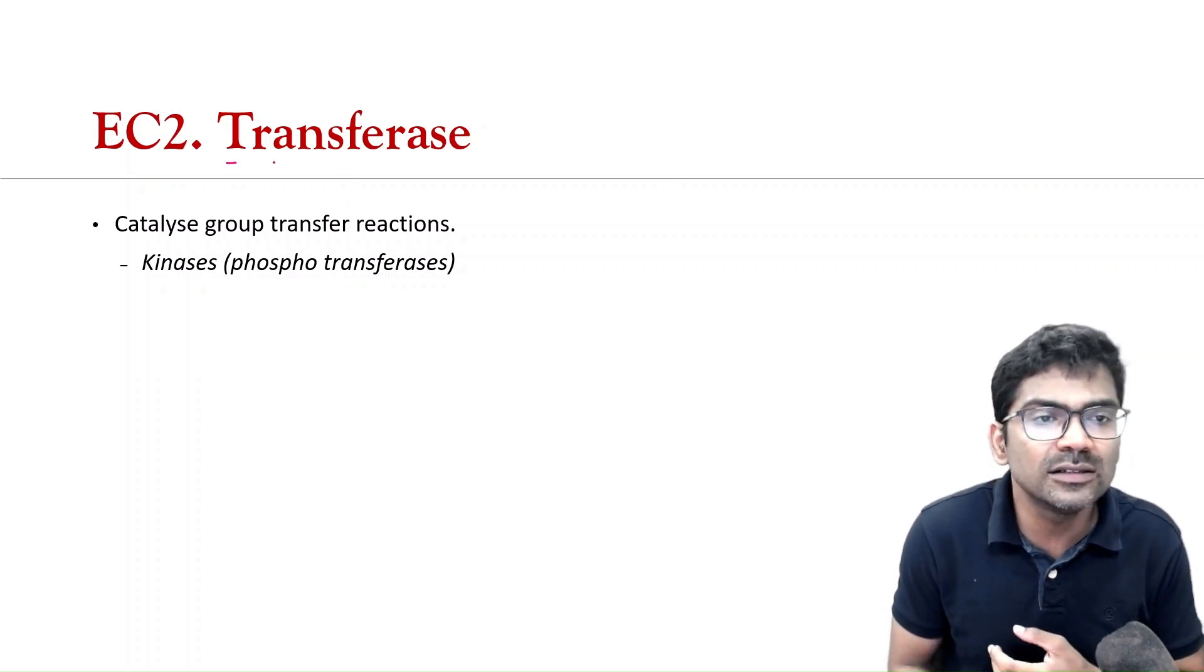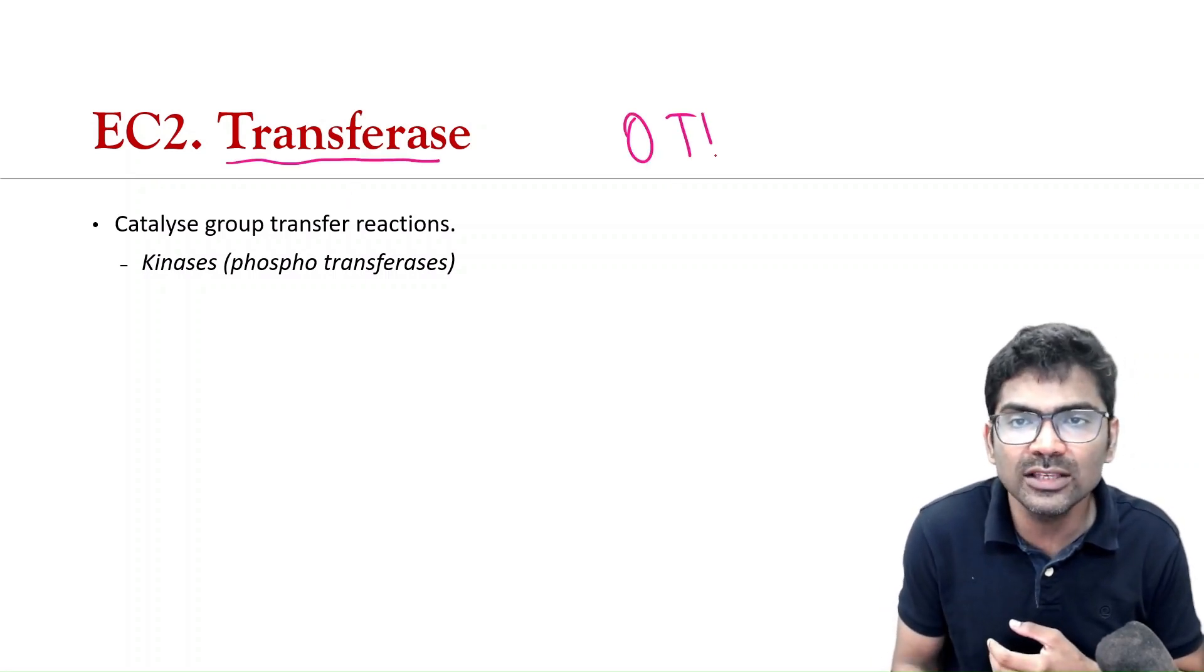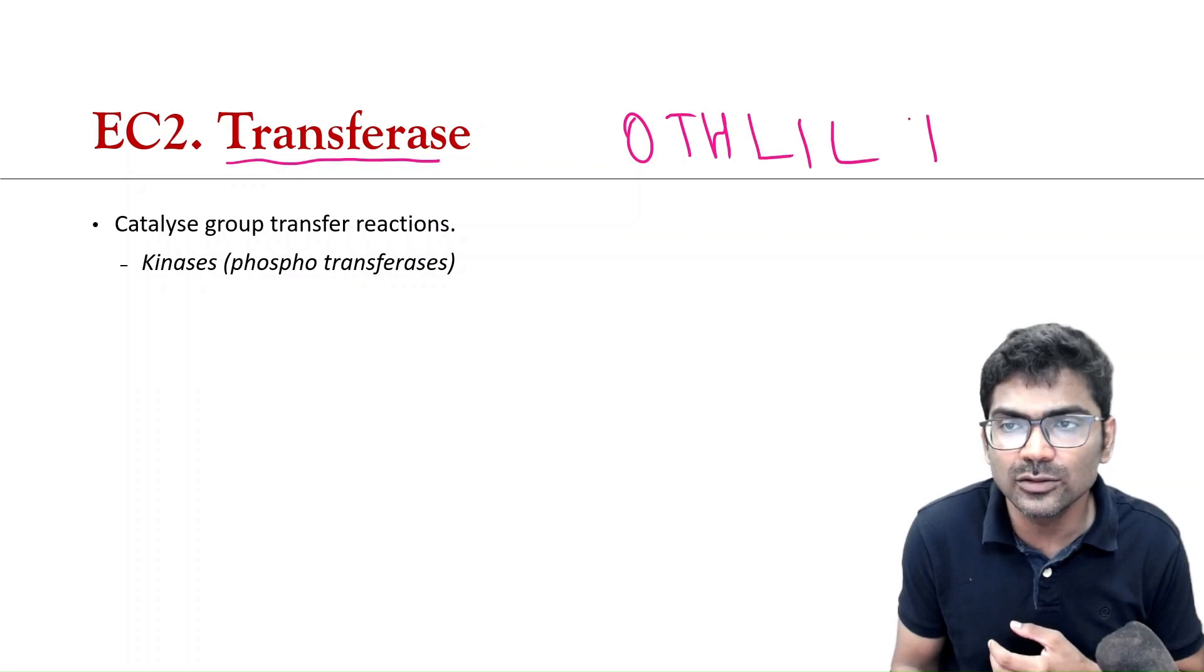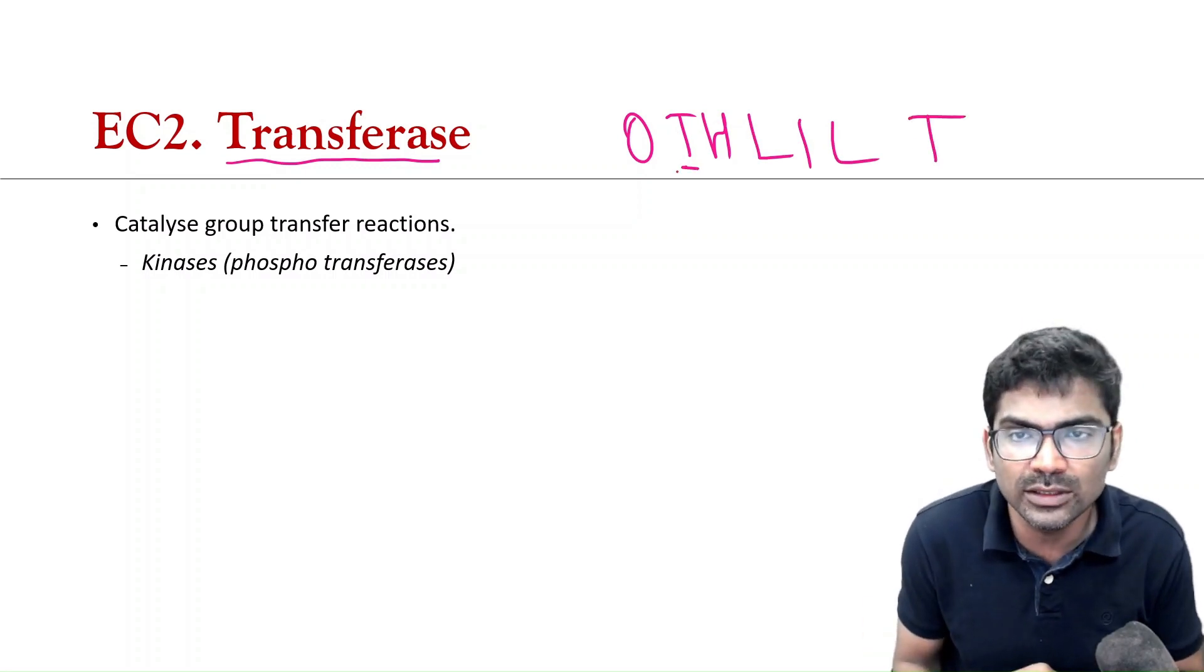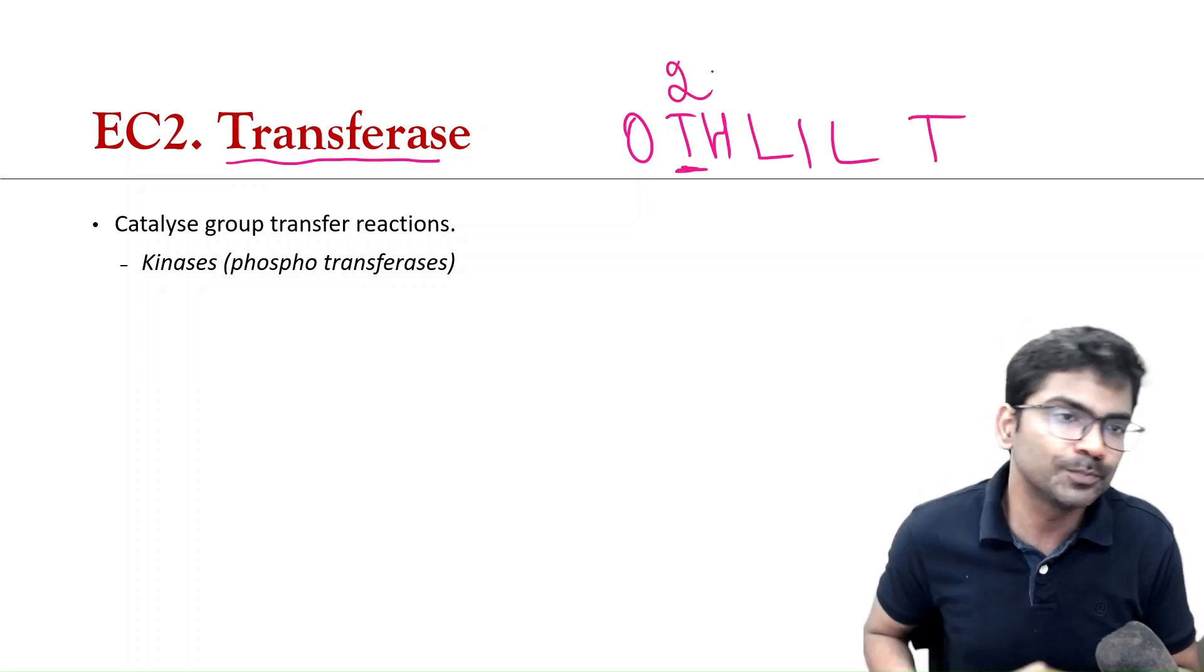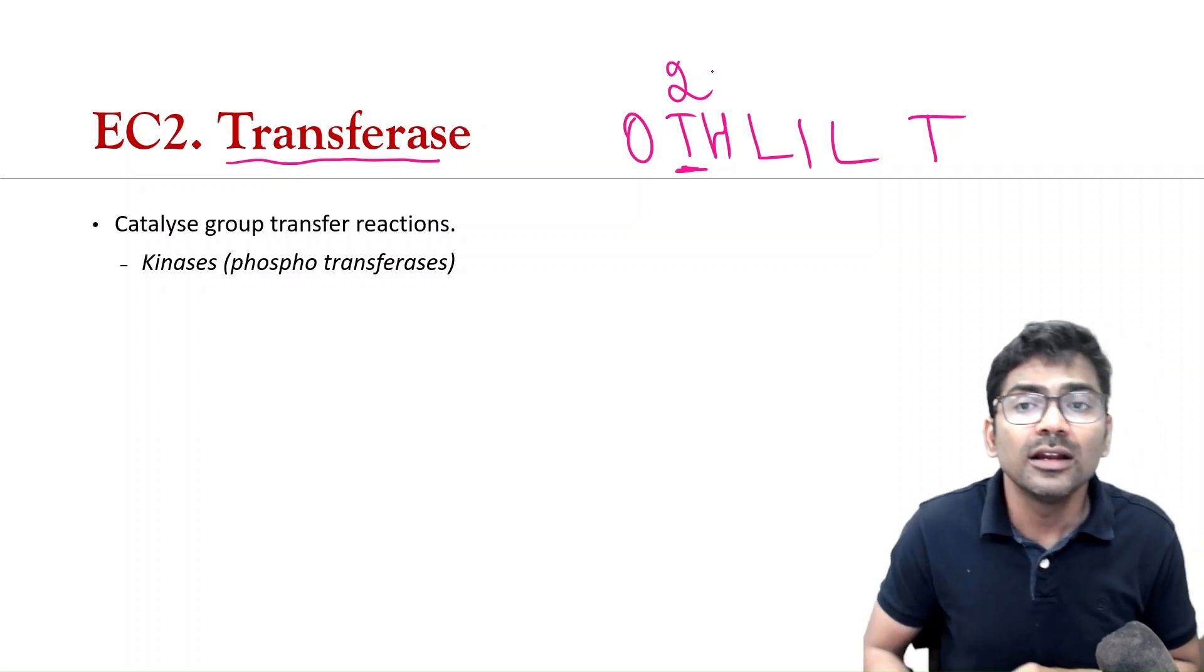So, enzyme class 1 is oxidoreductase. Let us focus on the other enzyme classes. This is EC2, that is transferase, O-T-H-L-I-L-T. So, this order is very, very important. So, T is EC2. So, this is what transferase is.